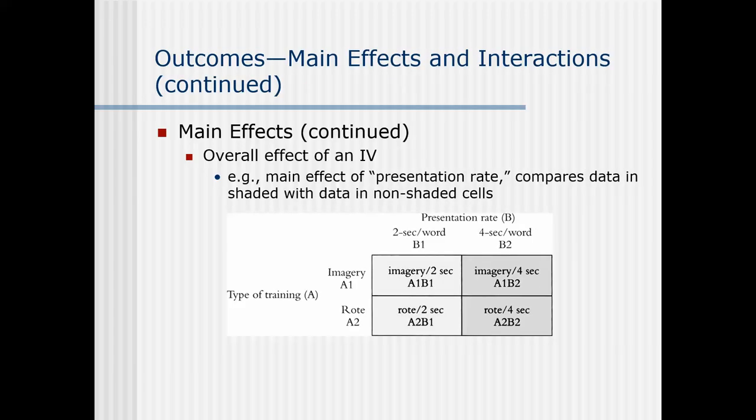The other main effect would be the presentation rate. We look at everybody who got four seconds per word and everybody who got two seconds per word and compare them together, forgetting about type of training. This is like a simple one-IV experiment with presentation rate as the independent variable.